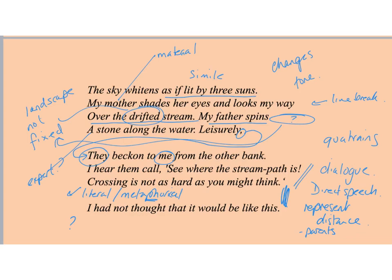Looking at the form and structure: you've got five quatrains. Although it may seem at first that there's no rhyme at all, when you look more carefully you actually do find it — that's where the para rhyme comes in.